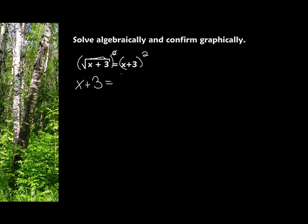So I end up with x plus 3 equals x plus 3 times x plus 3. Now some of you at this point might say, hey, let's just divide by x plus 3 on both sides. Well, if we do that, we're going to miss one of our solutions. So we're going to keep working.